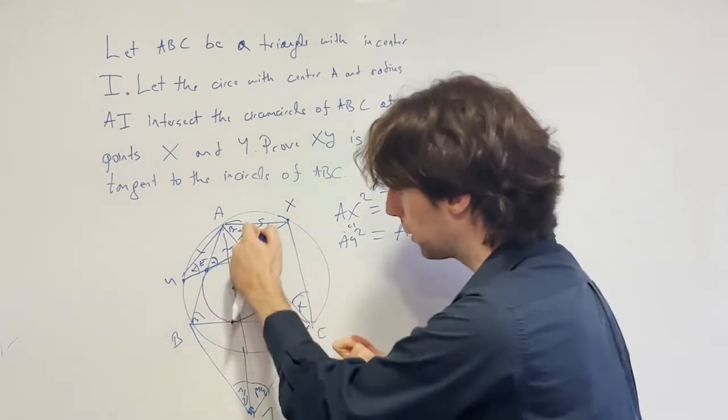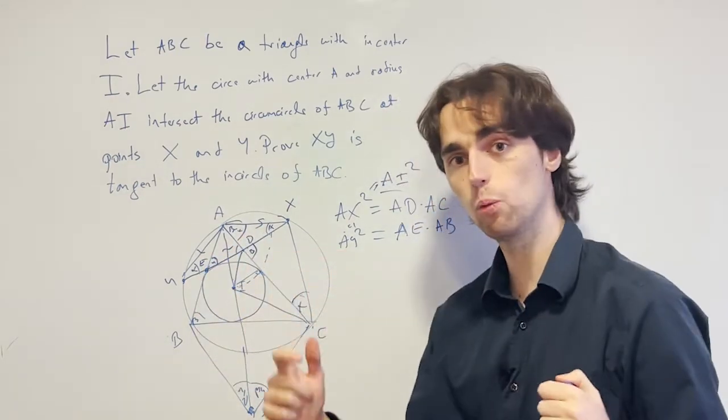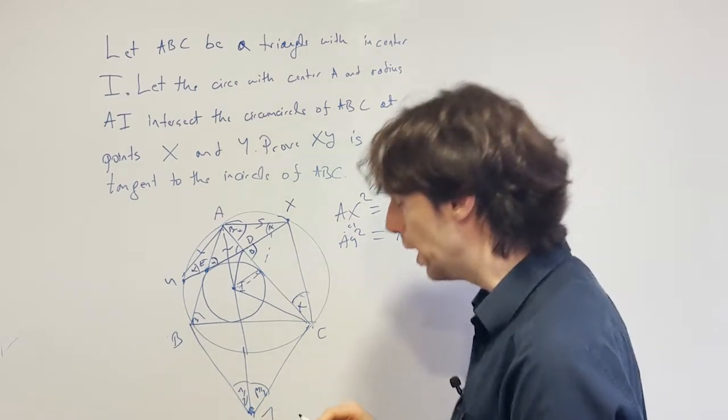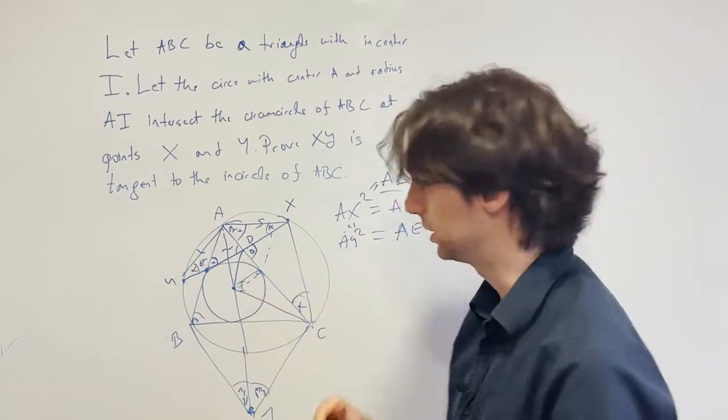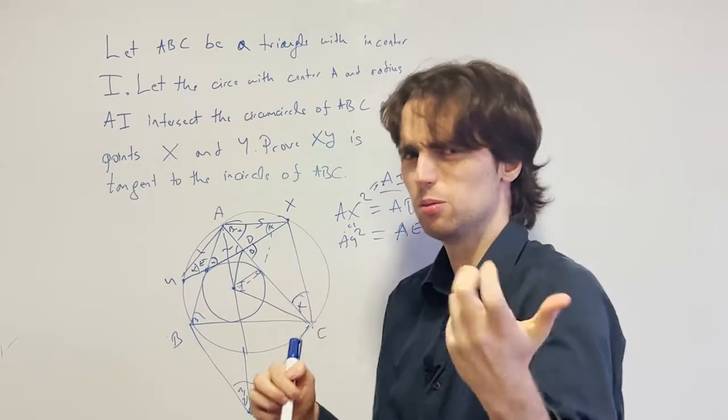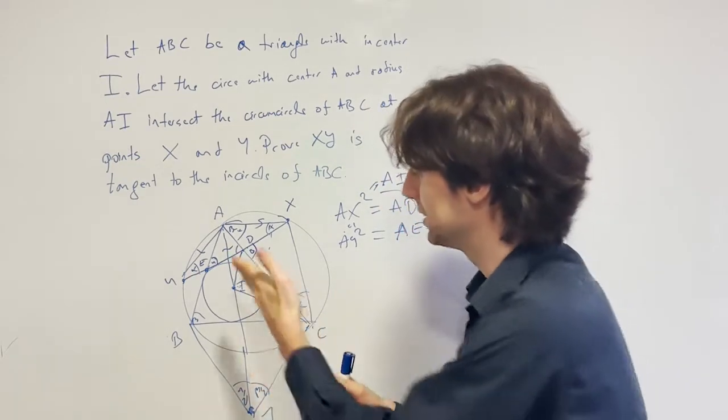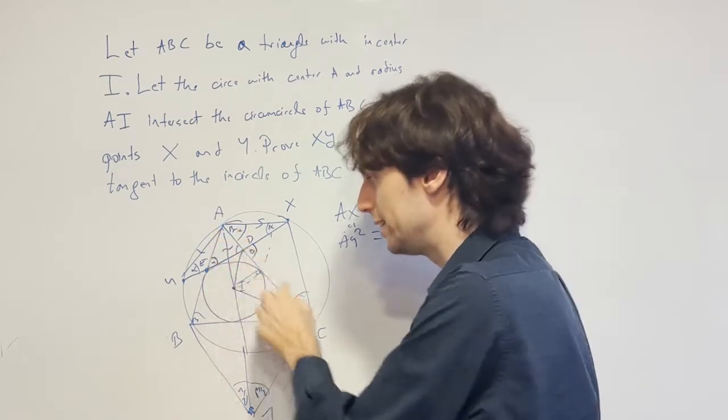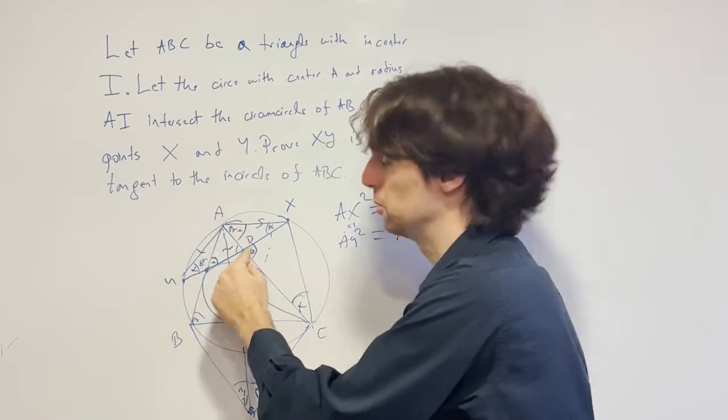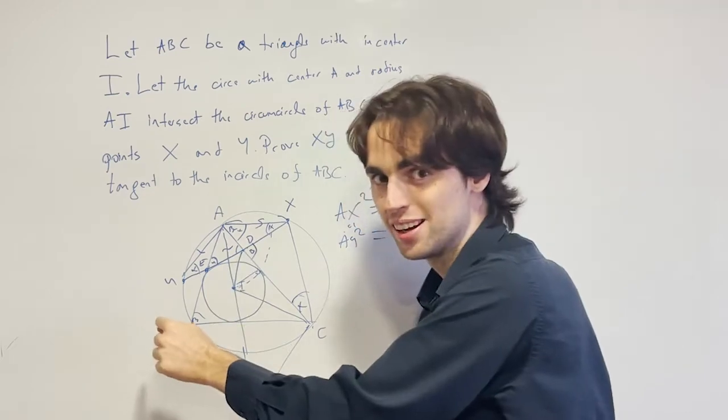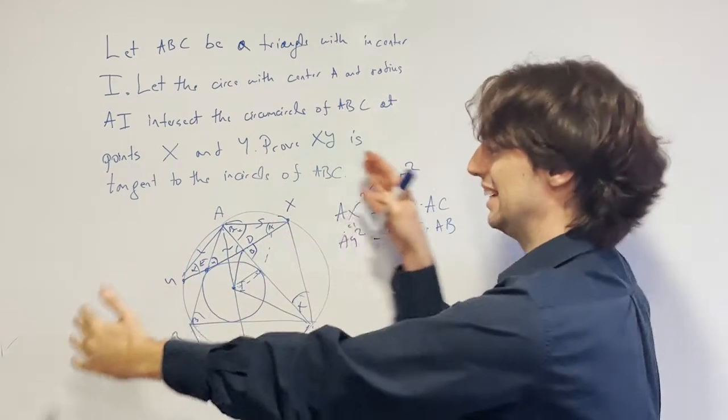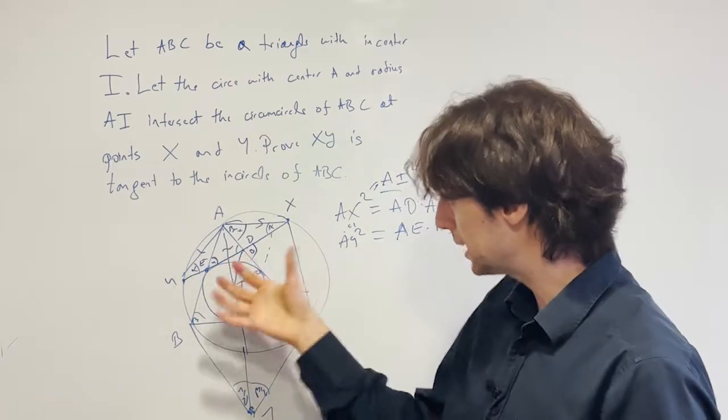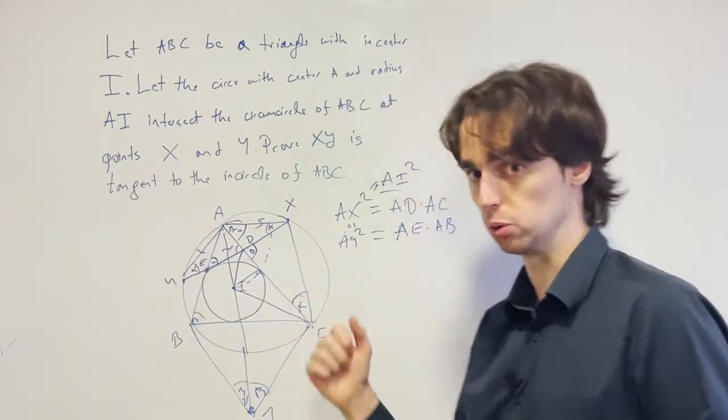So what would it mean for this if I was the excircle opposite A? Well, like the center of the excircle opposite A. And the reason we know that matters is because this incircle is already tangent to AD and AE. And you need to prove it's tangent to DE. Right? XY is distant, DE is closer to the action. So that's why it makes more sense. We can always go back to X and Y.